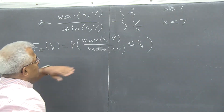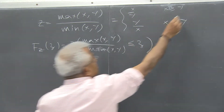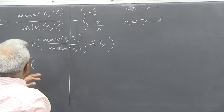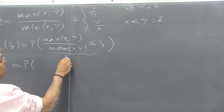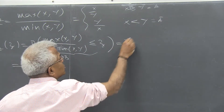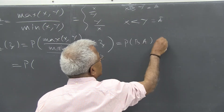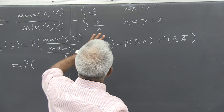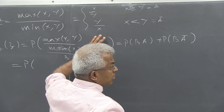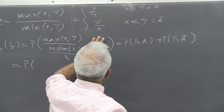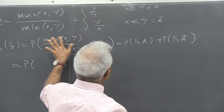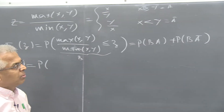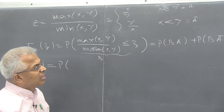If we call the event X > Y to be A, and this complement A-bar, and the whole event B, then this is P(B∩A) + P(B∩A-bar). Because B intersected with the union of A and A-bar, and A and A-bar are mutually exclusive, this becomes P(B∩A) union P(B∩A-bar), which is the same as P(BA) + P(BA-bar).